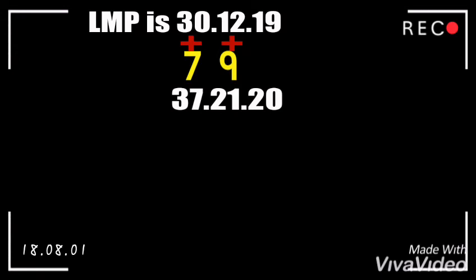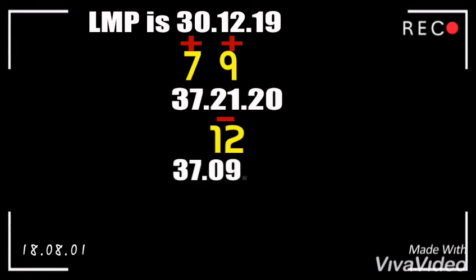The year changed because our calendar only goes up to 12 months. We start by calculating the months first: 21 minus 12 gives us 09. Our equation is now 37/09/20.